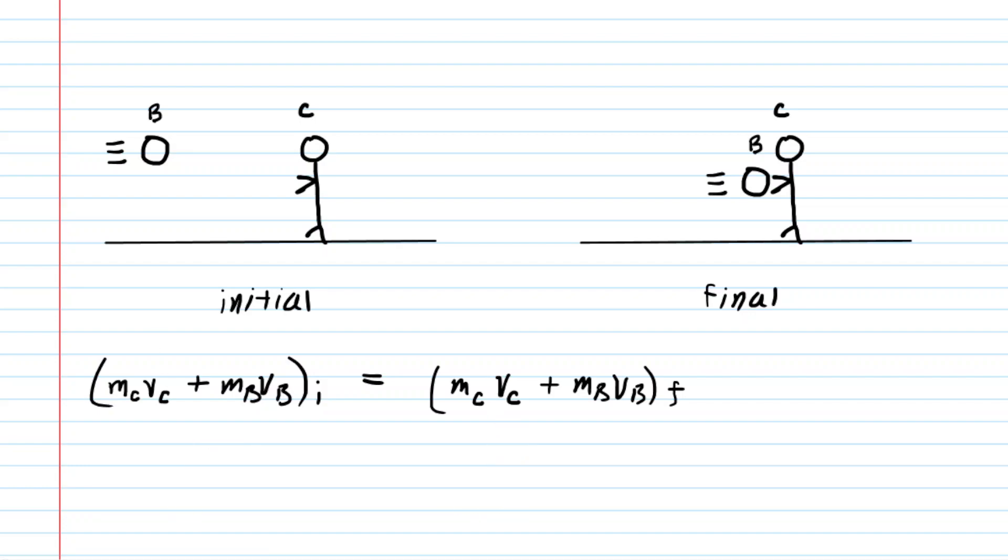A couple of important points to keep in mind: the initial velocity of the catcher was zero. He was stationary. So because the initial velocity of the catcher is zero we're going to be able to knock out this term right here because if your velocity is zero you have no momentum either.